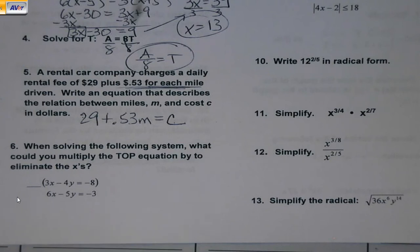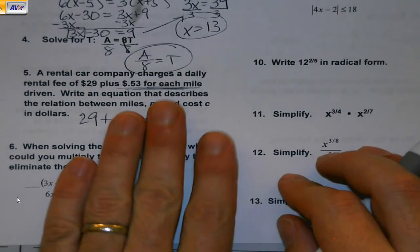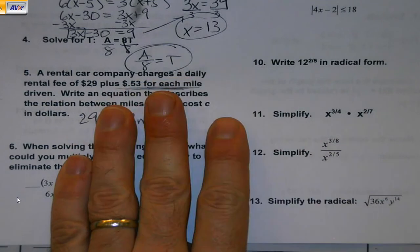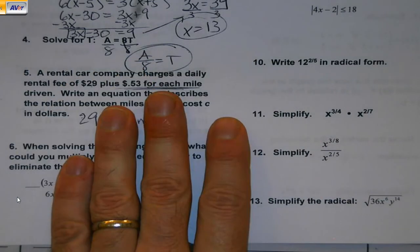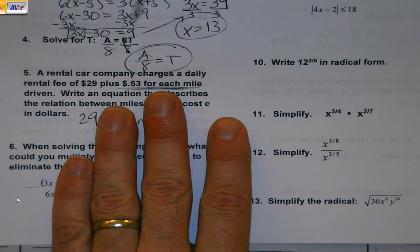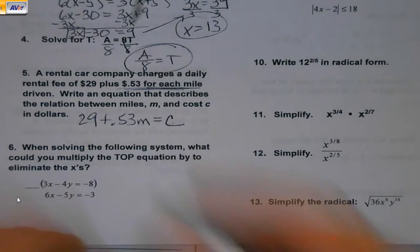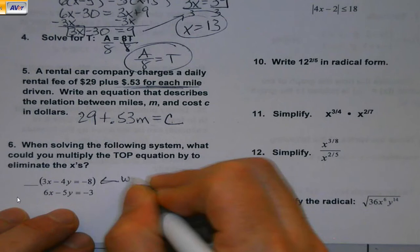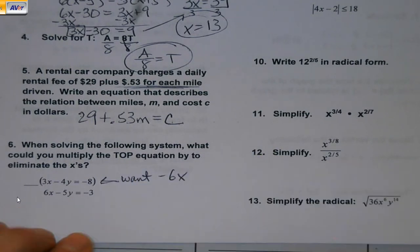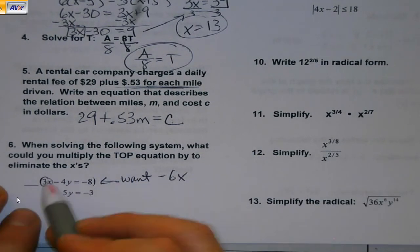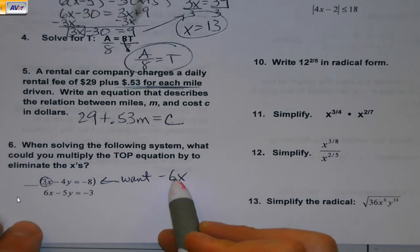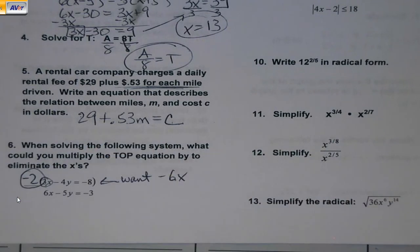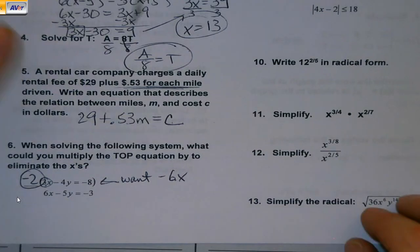When solving the following system, what would you multiply the top equation by to eliminate the x's? Let's think about this for a second. If I want these x's to eliminate when I add down, what do I want this to become? What's the opposite of positive 6? Negative 6. So I want negative 6x. So, if that's 3 and I want it to be negative 6, what do I have to multiply it by to get there? Negative 2. That's all I need. Don't solve it. Just, what do I multiply by? Fill in the blank. Go about your business.